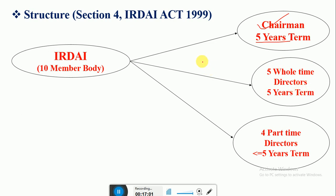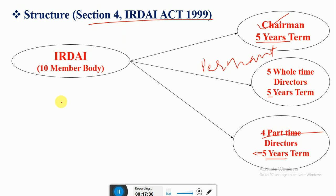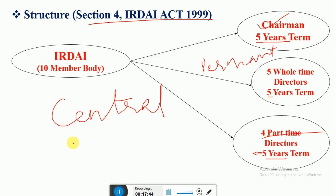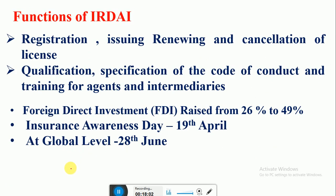IRDAI consists of five whole-time directors, meaning permanent directors, whose tenure is also five years. There are also four part-time directors whose tenure is less than or equal to five years. Section 4 of the IRDAI Act 1999 deals with the structure of IRDAI. All these members are appointed by the central government.